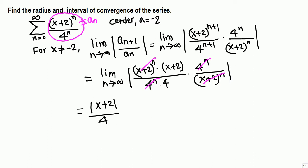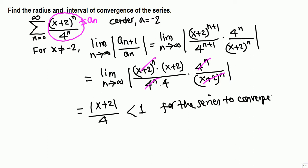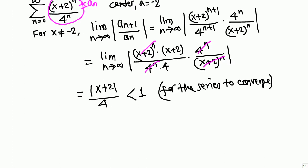From the ratio test, when the limit of |a_{n+1}/a_n| is less than 1, the series converges. So for the series to converge we need |x+2|/4 less than 1, which is the same as |x+2| less than 4.